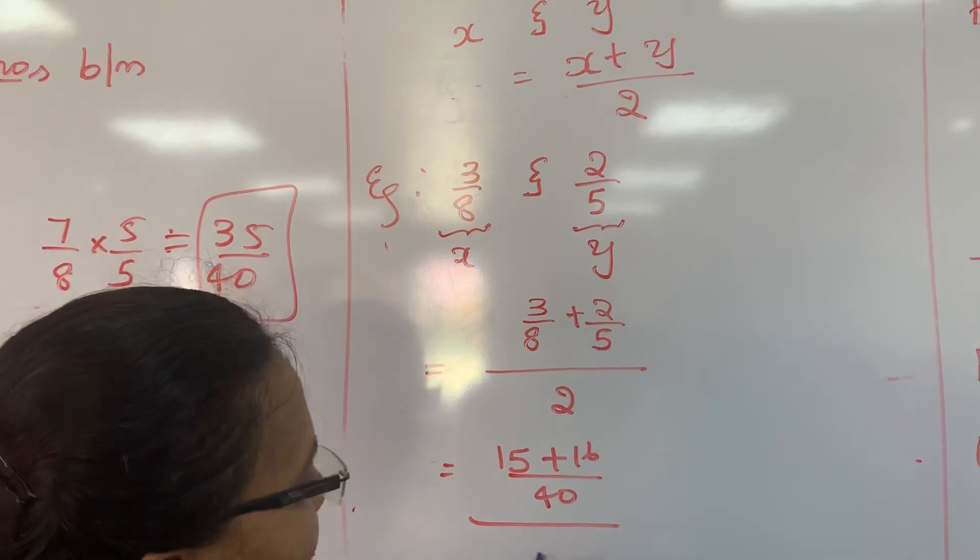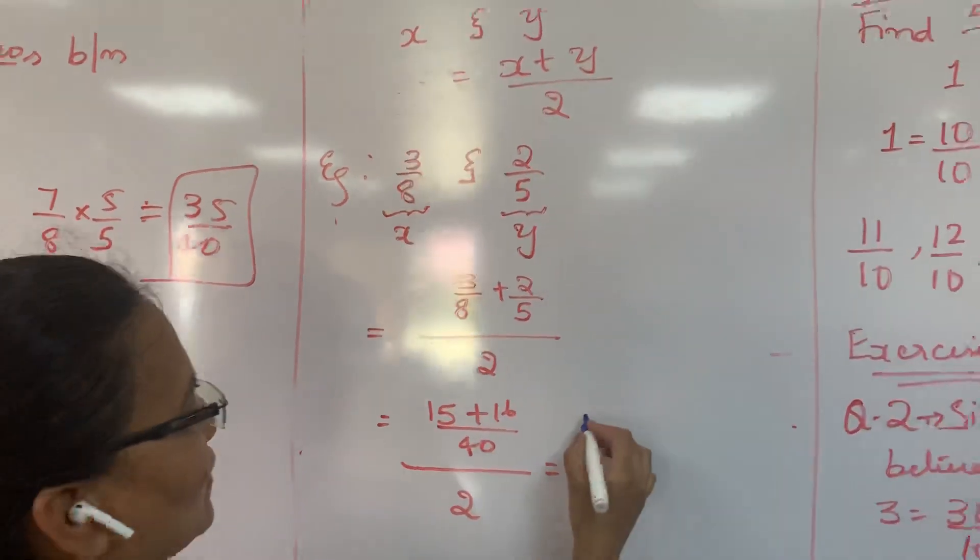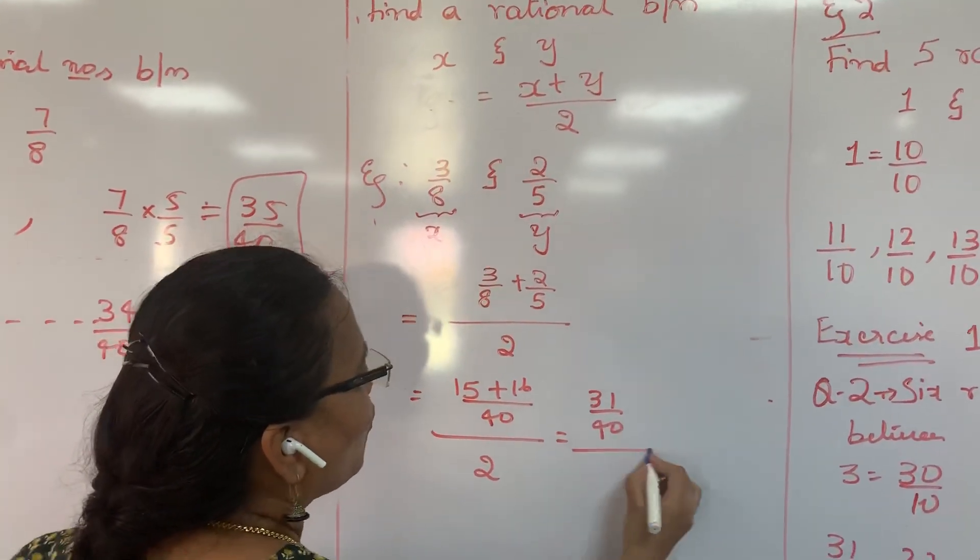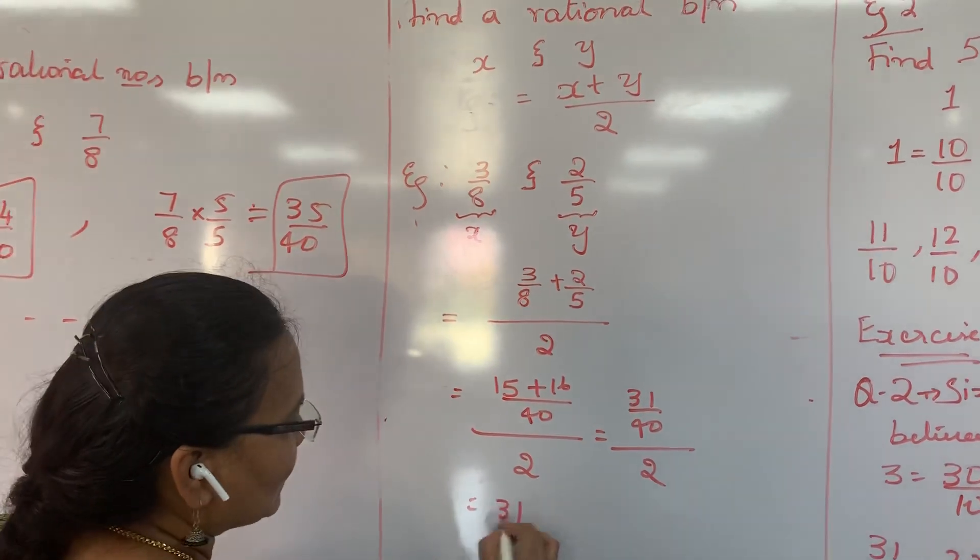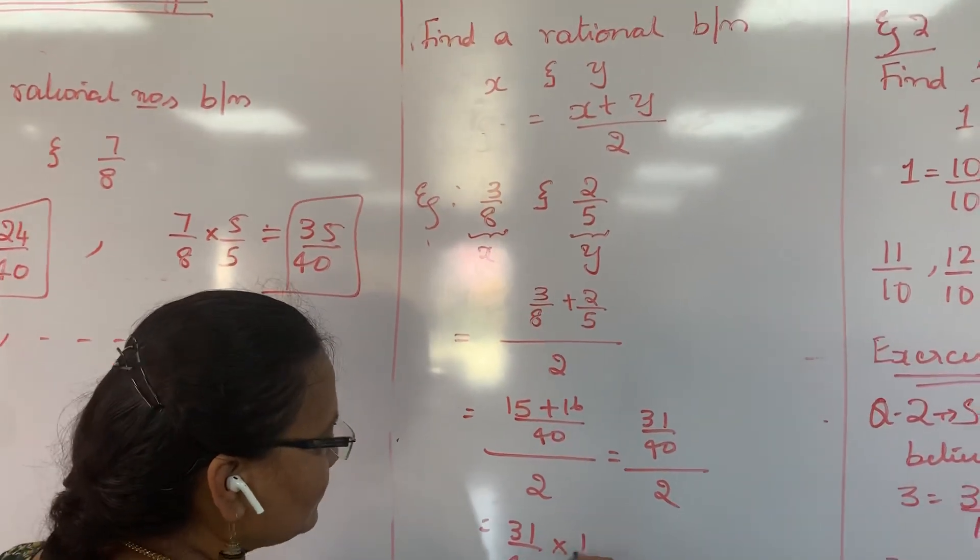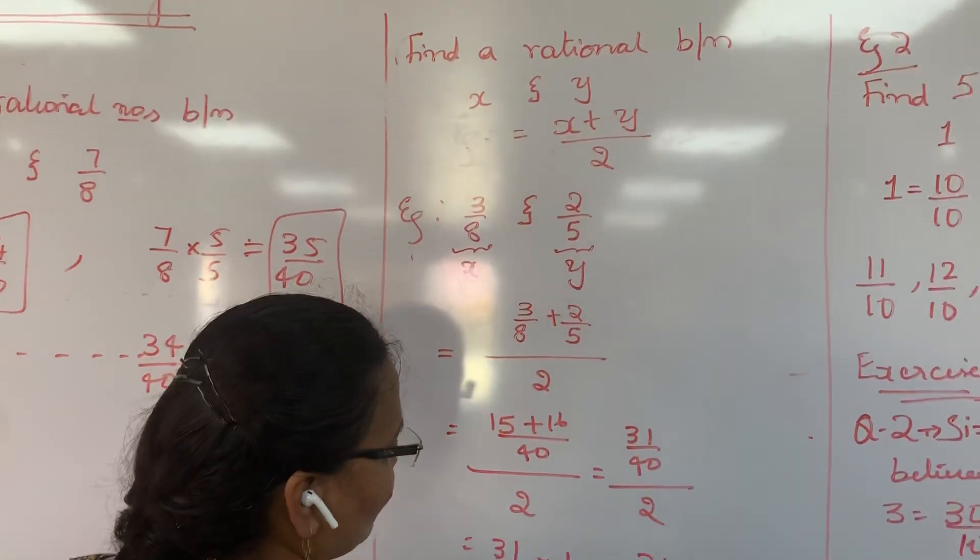So this is 31 by 40, whole divided by 2, or 31 by 40 into 1 by 2. The answer is 31 by 80. So our rational number between 3 by 8 and 2 by 5 is 31 by 80.